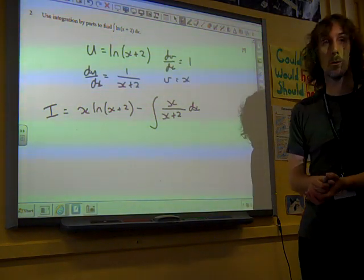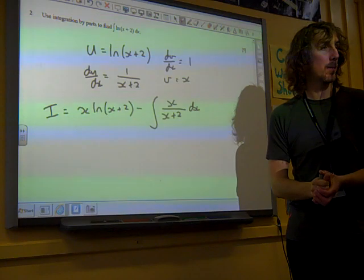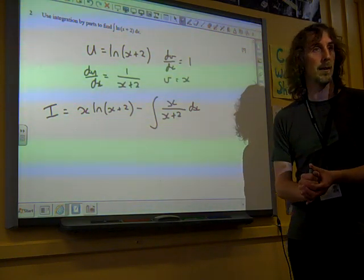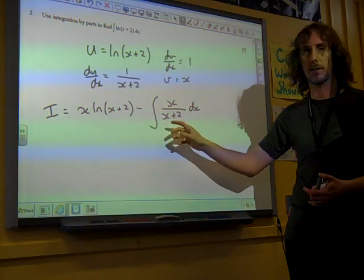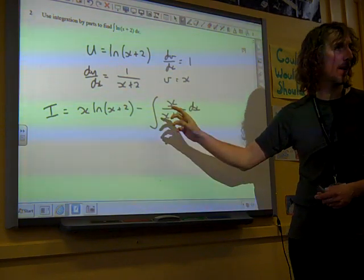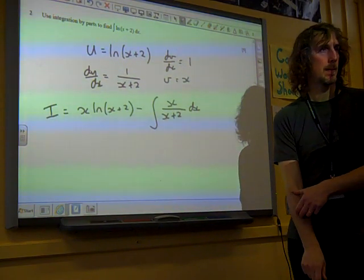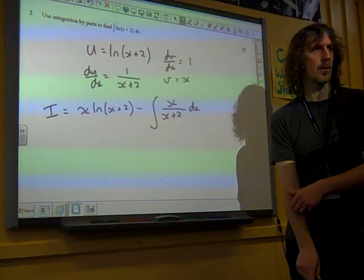Now this is why this is worth a few more marks than this normally might be. If it had just been integrate ln(x), we would have been there really, because this would have cancelled down, we would have had something very simple in there, and we would have been finished. But now we've got to integrate x over x plus two. How are we going to integrate x over x plus two?